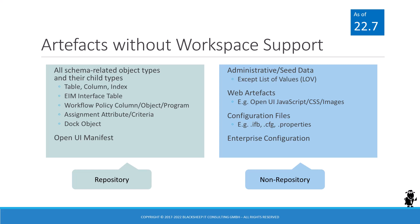The second area is the Open UI manifest. Outside of the repository, the only workspace-enabled artifact so far is List of Values. Anything else, as of July 2022, is still managed in the traditional ways, including administrative data, web artifacts such as Open UI JavaScript files, configuration files, and enterprise configuration data.